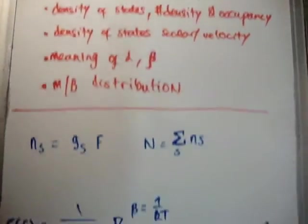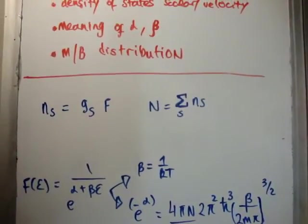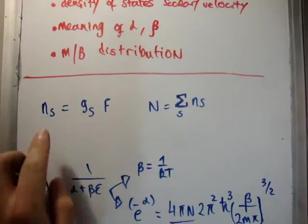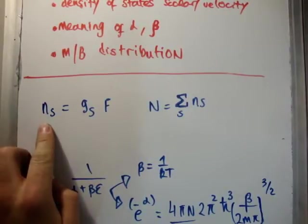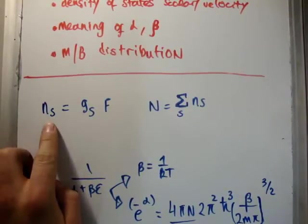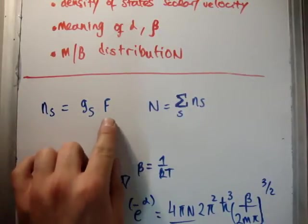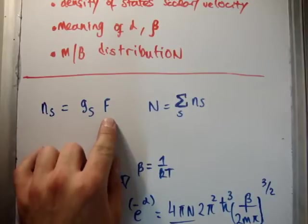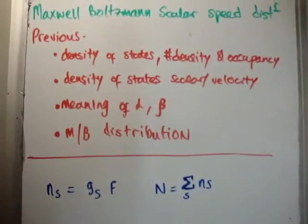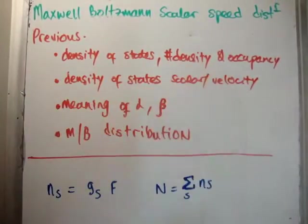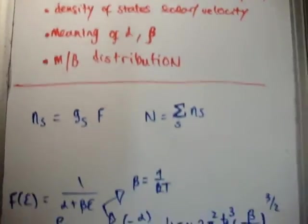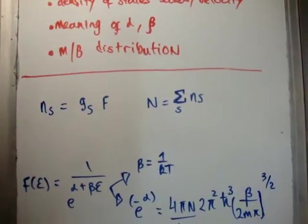So a quick bit of recap. We saw in a previous video that, in general, for discrete states, the number of particles in a particular macro box, or the s-th macro box, n sub s, is equal to the number of states in the s-th macro box multiplied by the probability of occupancy. If you want to understand that more, look at my video, Density of States, Number Density Occupancy.